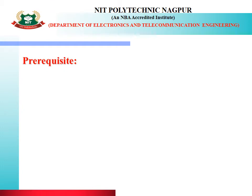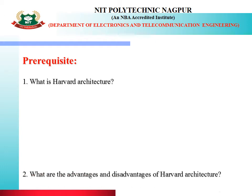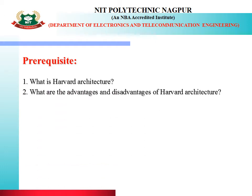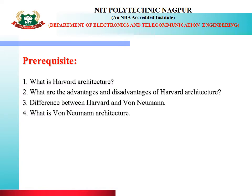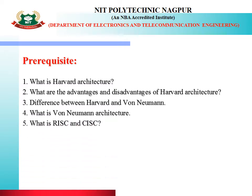Let's start with the prerequisite. In the last lecture, we studied about what is Harvard architecture, what are the advantages and disadvantages of Harvard architecture, the difference between Harvard and von Neumann architecture, what is von Neumann architecture, and what is RISC and CISC and the difference between RISC and CISC.